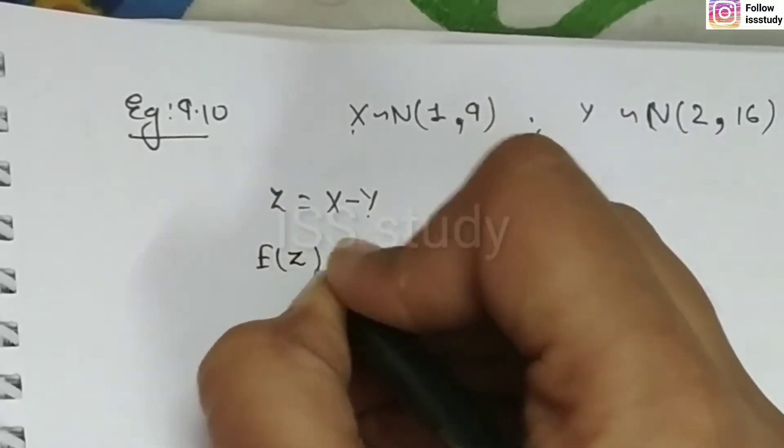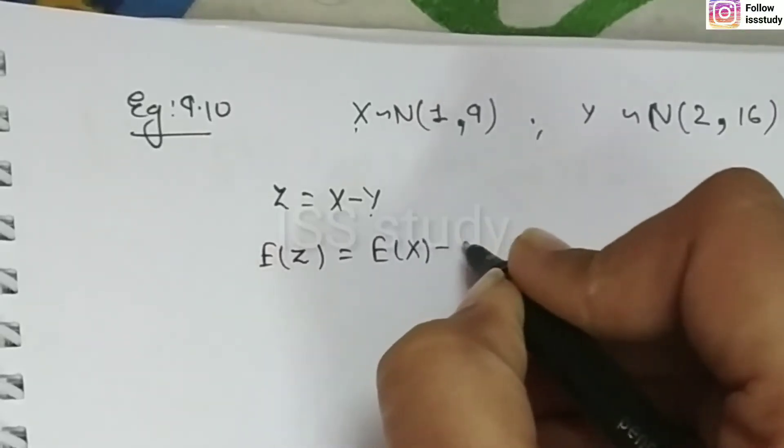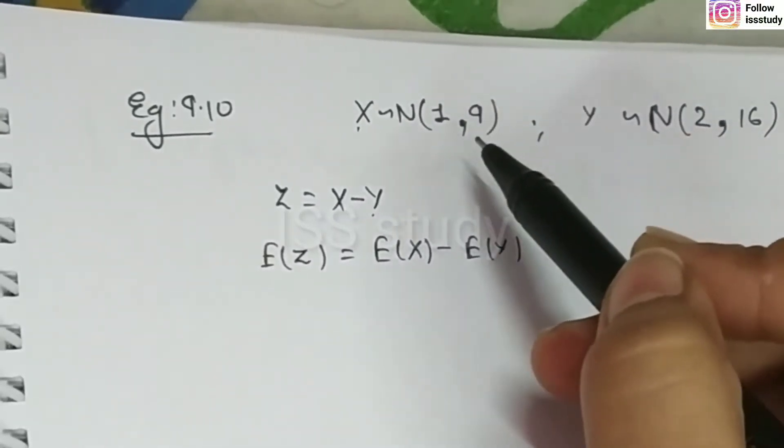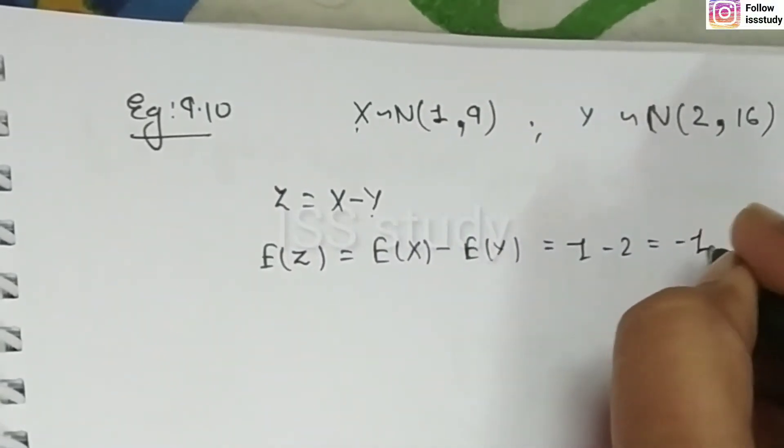So, if we look at the expectation of z, then expectation of x minus expectation of y. So, when we look at expectation of x, then minus y means 1 minus 2 means minus 1.